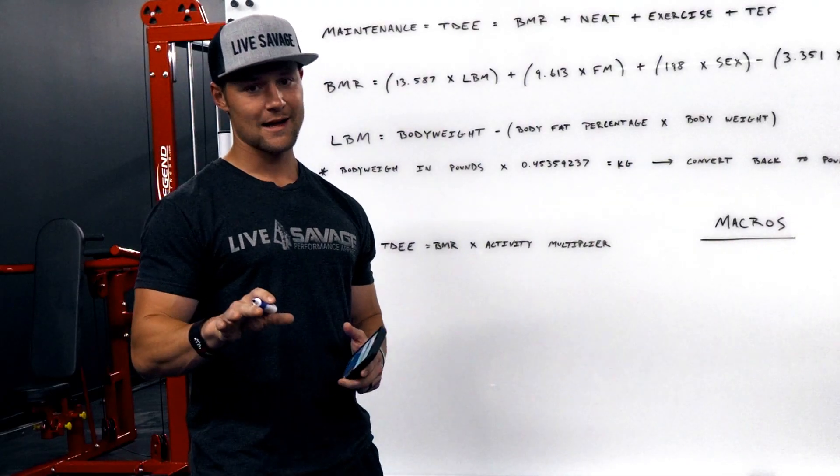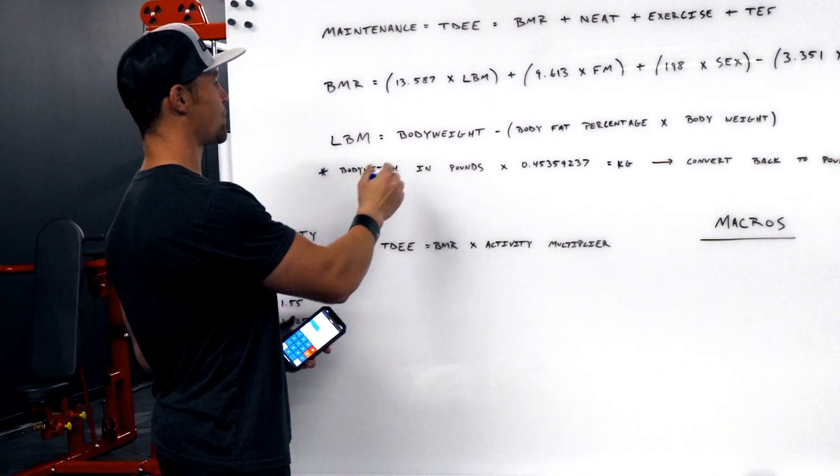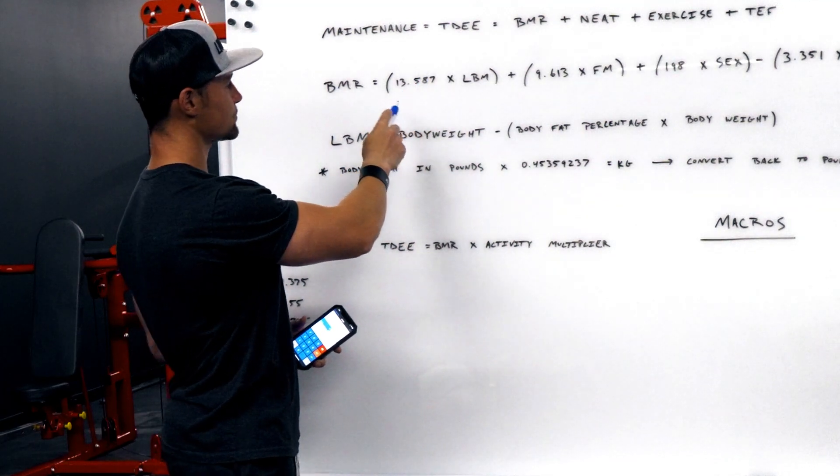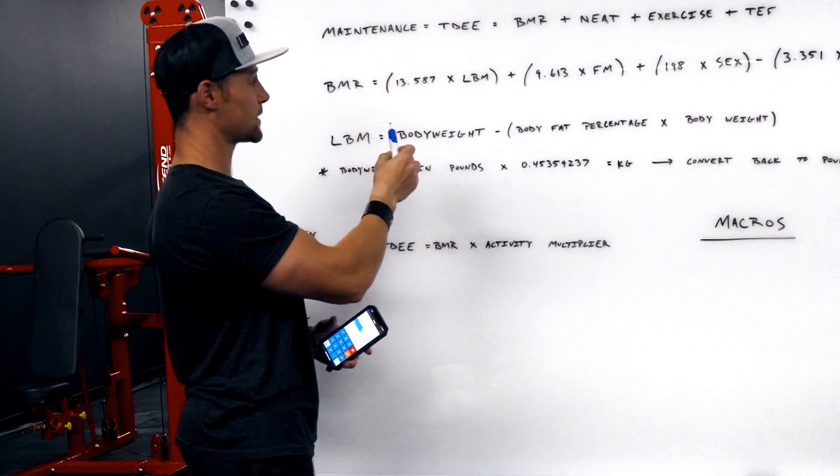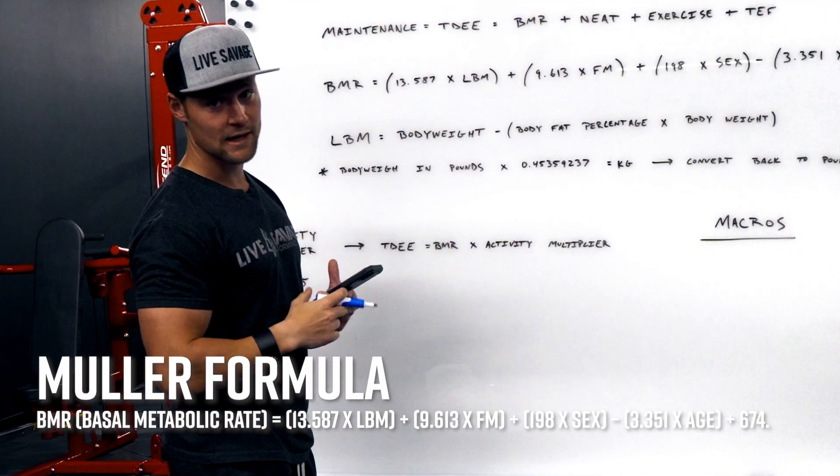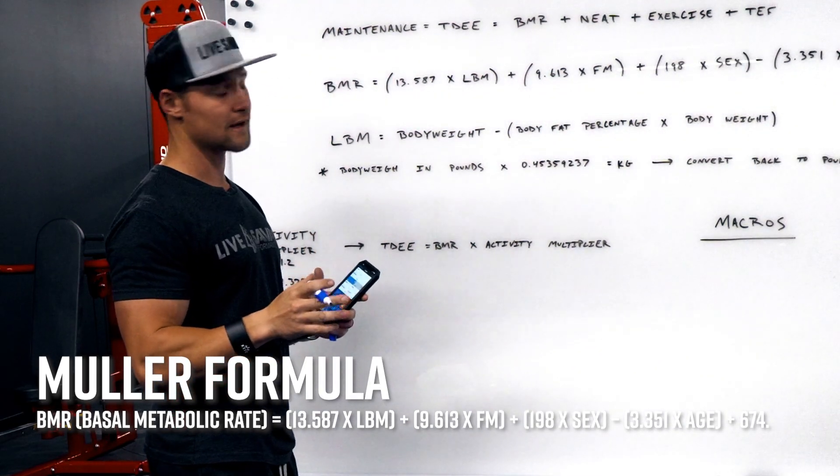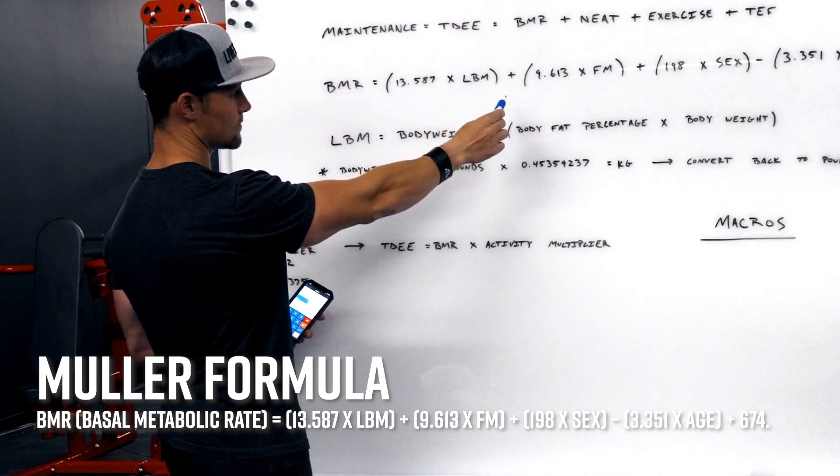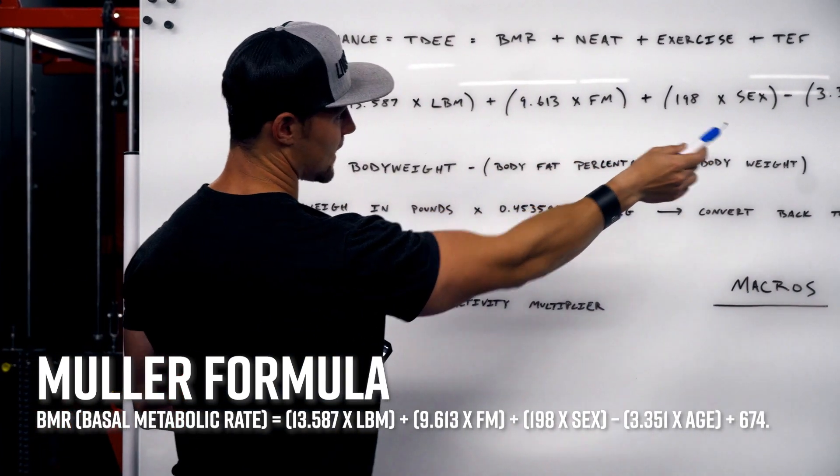All right, so now we've got Dylan's stats. Let's start plugging that into our calculation here. So BMR, we need BMR to determine our total daily energy expenditure. In order to find BMR, we have this formula here. This is called the Muller formula and it's one of the many methods used. I like this one because it takes the sex into account. It takes lean body mass and fat mass all into account, whereas a lot of them are much more vague than that.